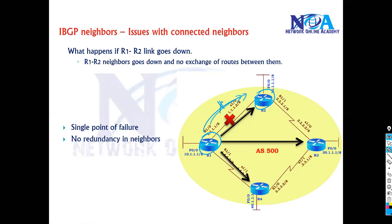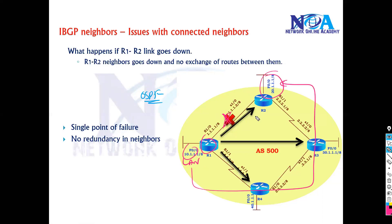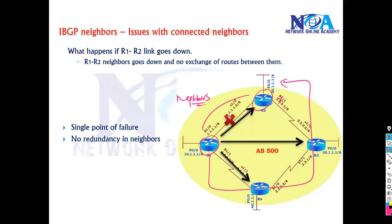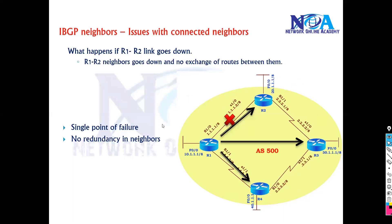In contrast, with OSPF or EIGRP, even if this interface fails, router one's LAN can still communicate with router two's LAN via another path. Dynamic routing protocols work totally differently. But with BGP, router one will not automatically form neighbors via another path — everything depends on the configured neighbors. If those neighbors are unreachable, no route exchange happens, leading to a single point of failure.